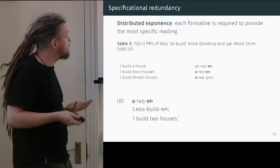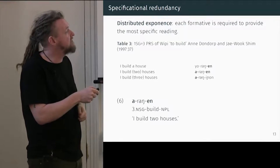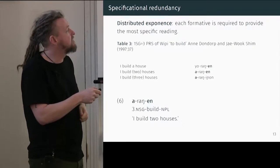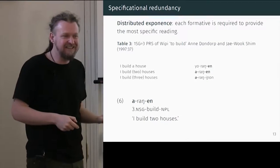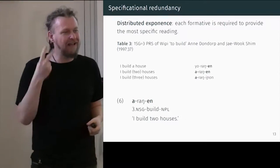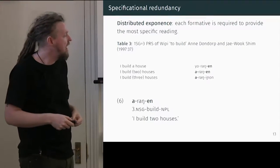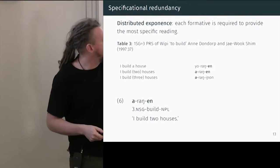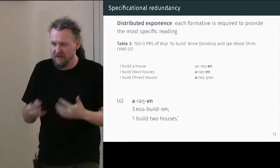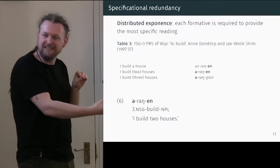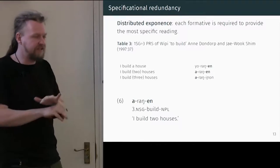Then finally we have distributed exponents — our example from NEN at the beginning, also in WIPI. If we want to say 'we're building two houses,' we use the prefix 'a', which means non-singular, and the suffix 'iang', which means not plural. So if it's more than one and less than three, it has to be two. We have this dual marking. If we lose the prefix, we lose some information; if we lose the suffix, we lose some information. But together they give us the whole picture. You've got some redundancy — if you lose some, you're not losing all the information — but none of the individual pieces are entirely redundant.